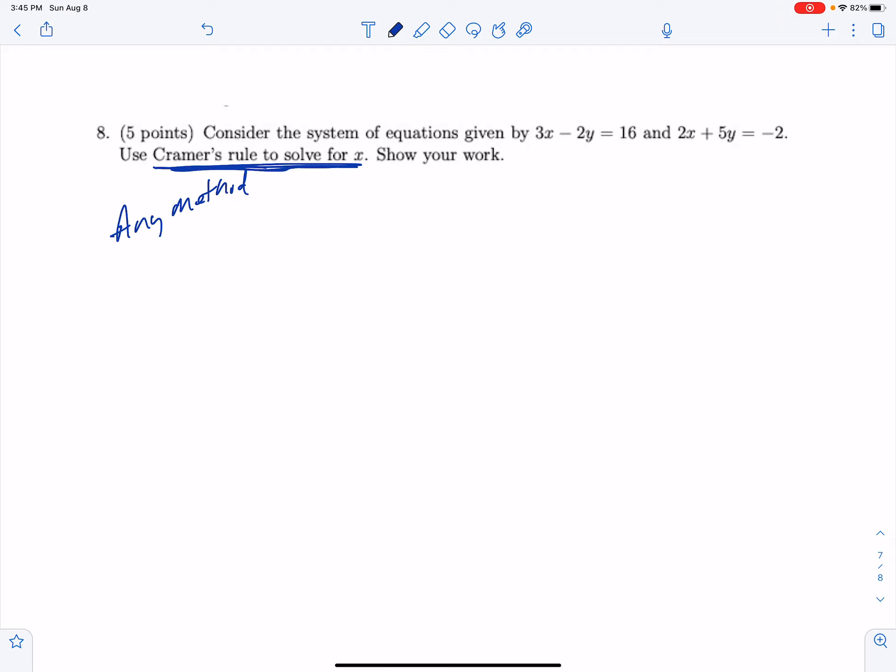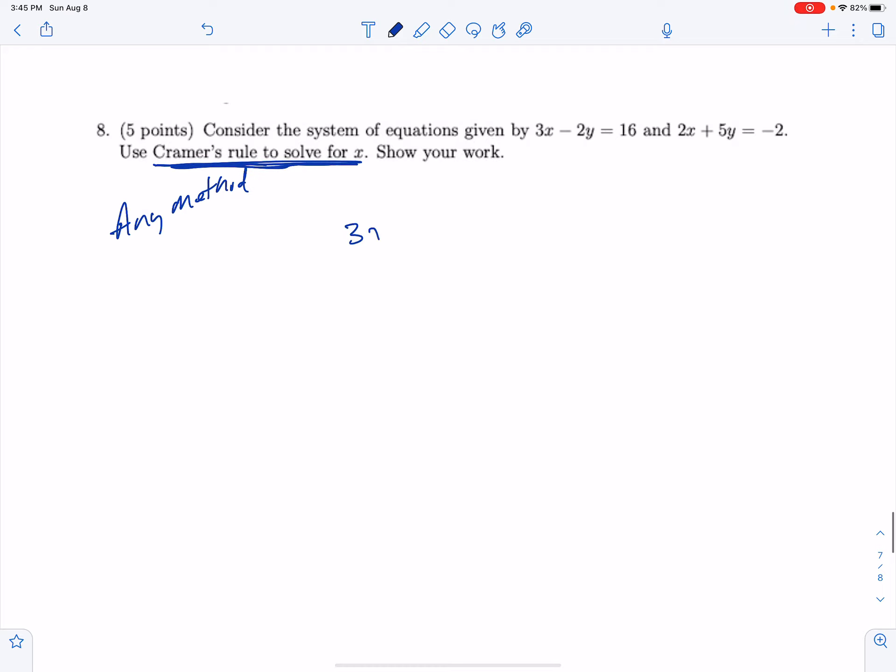We'll start with the equations. Remember, there's the writing of the equations and there's the solving of the equations - those are two different processes. In this one, if I'm trying to solve for x, I can try to eliminate y. I'm going to multiply both these equations by the appropriate number.